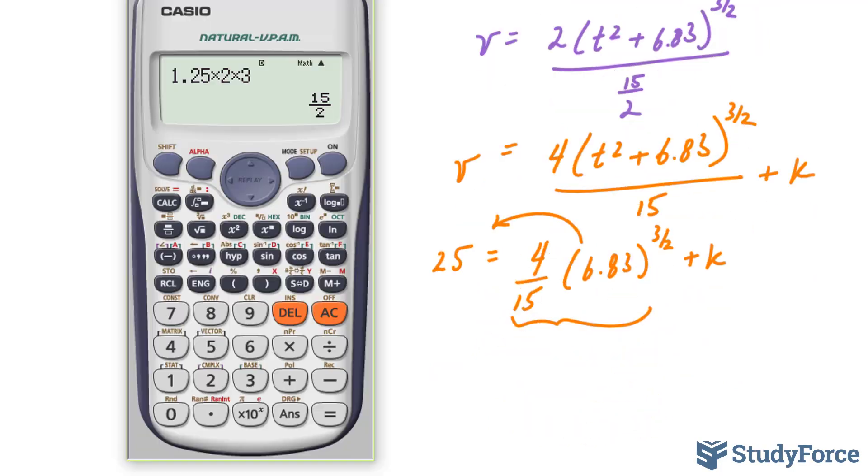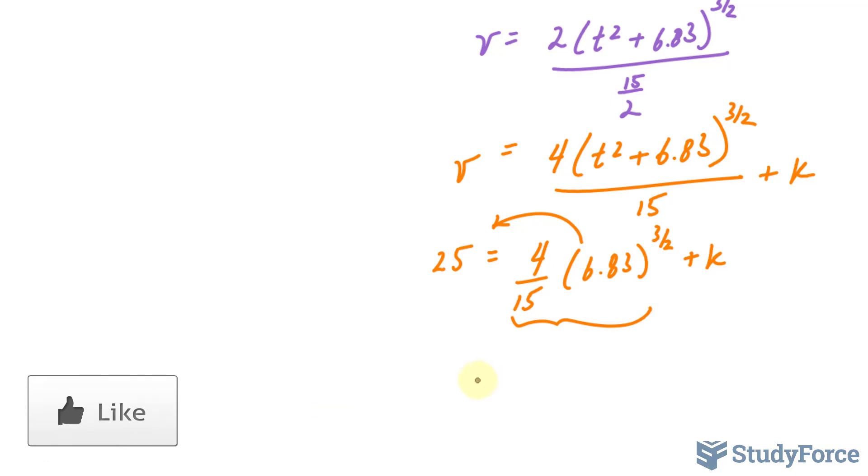25 minus 4 over 15 times 6.83 to the power of 1.5, which is the equivalent of 3 over 2. That gives me 20.24 or simply 20.2. So k is equal to 20.2.